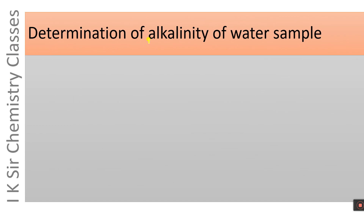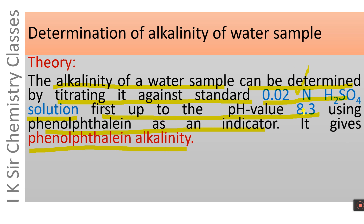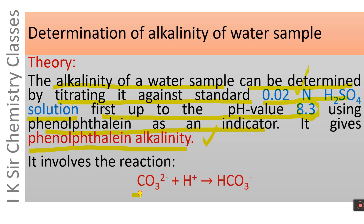Determination of alkalinity of a water sample. The alkalinity of a water sample can be determined by titrating it against a standard 0.02 N H2SO4 solution. First, up to a pH value of 8.3 using phenolphthalein as an indicator, which gives the phenolphthalein alkalinity of the water sample. This involves the following reaction: carbonate ion reacts with H+ ion of H2SO4 forming bicarbonate ion.